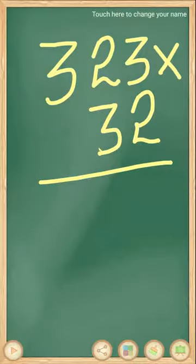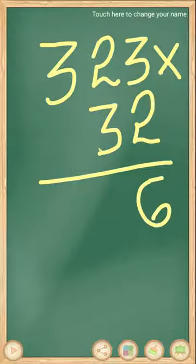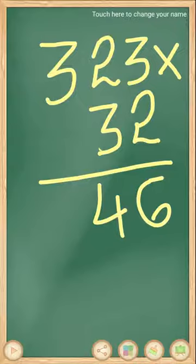First one, 323 × 32. Here you multiply 2 × 3, 2 × 3 equals 6, 2 × 2 equals 4, then 2 × 3 equals 6.